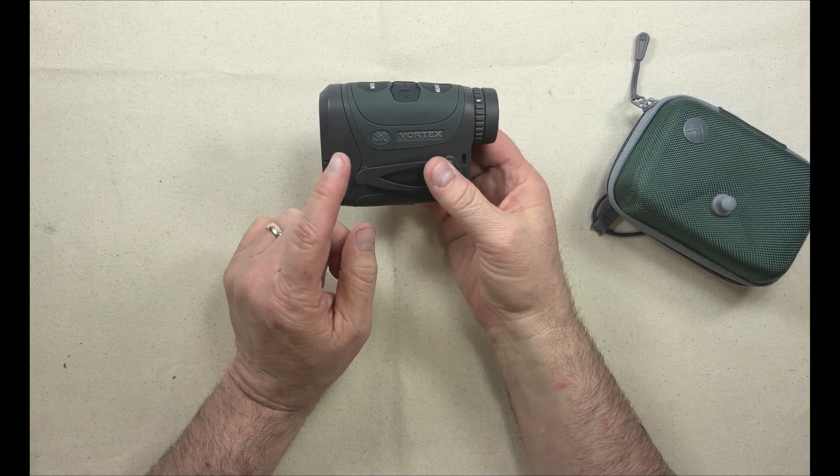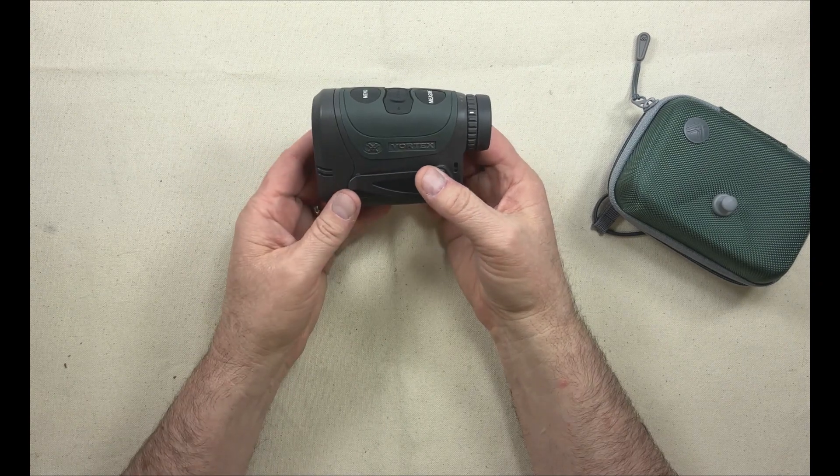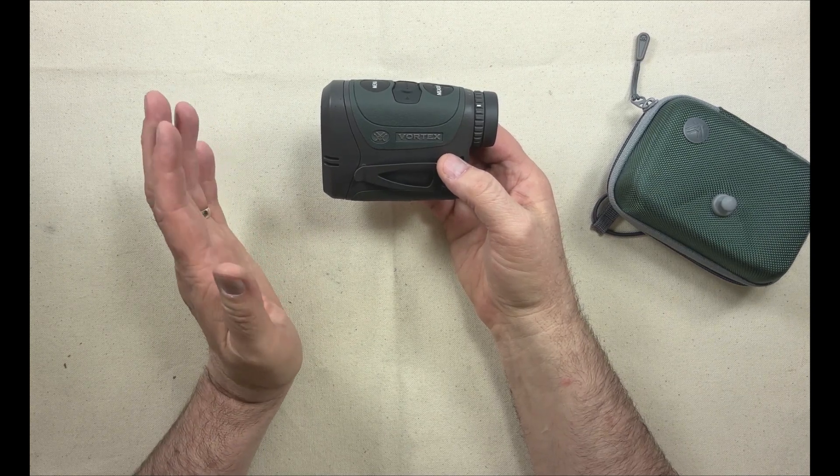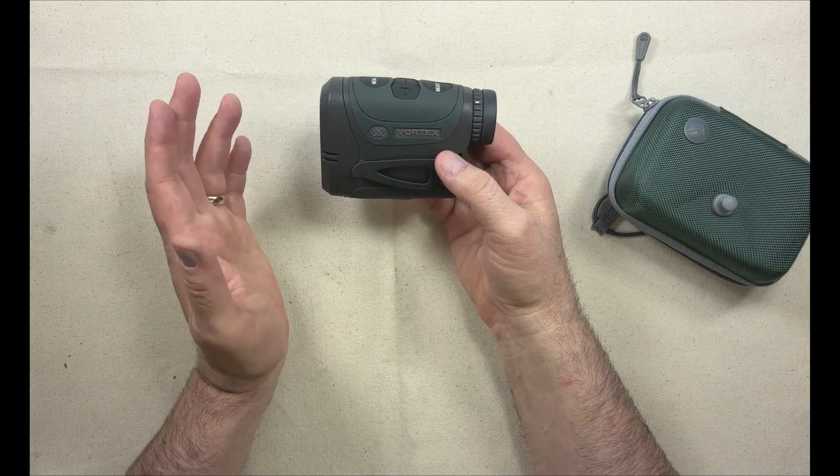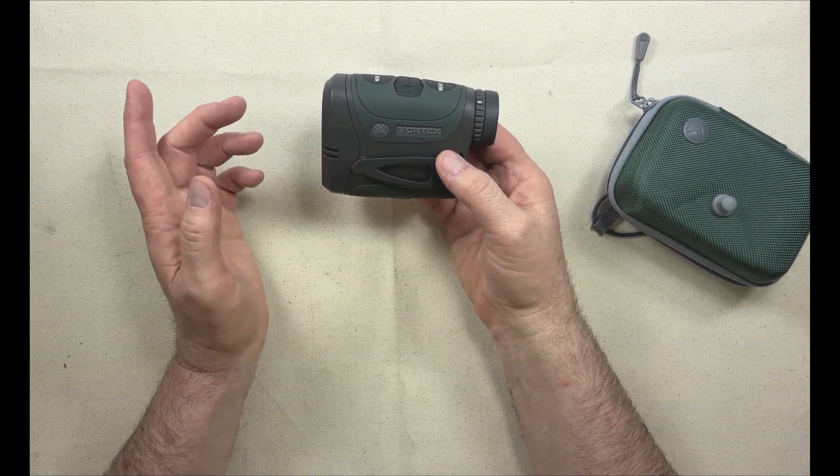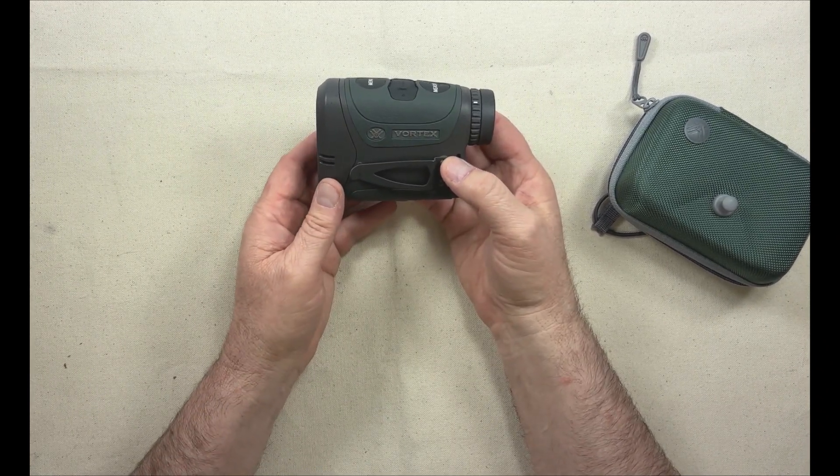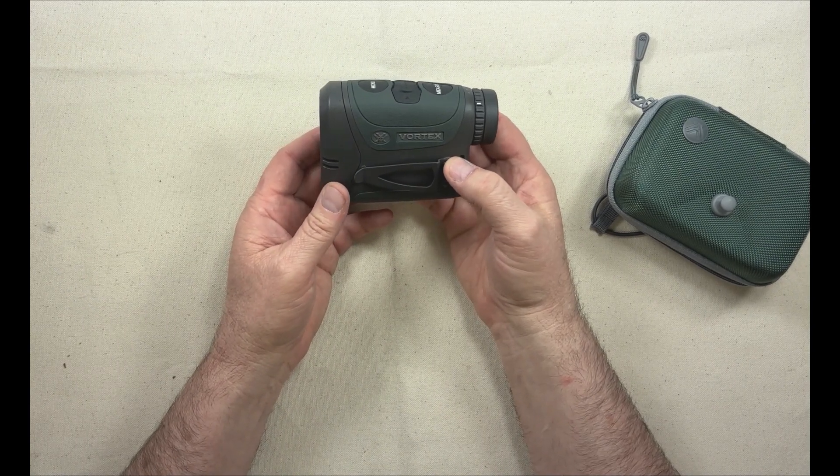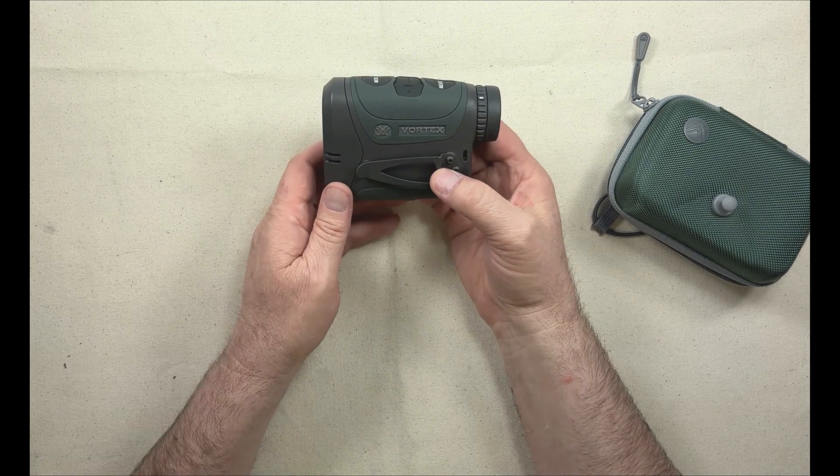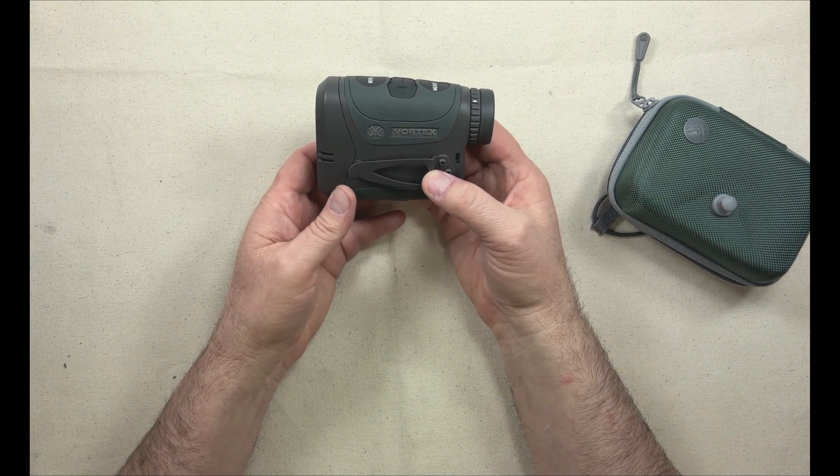It will integrate with geoballistics and basically give you almost like a custom firing solution based on your load data, things like bullet weight, BC, bullet speed, things like that. And you put all that data into the geoballistics and basically sync it to it, and it'll give you a custom firing solution. So you basically range it, and it will indicate, based on your setup, how to adjust for either mils or MOA, whatever you want to use, on a scope to compensate for the drop.